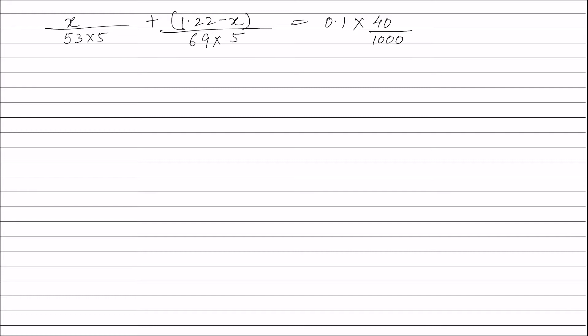Solving this equation, the value of x is 0.53 grams. Therefore, the weight of sodium carbonate in the mixture is 0.53 grams and the weight of potassium carbonate in the mixture is 1.22 − 0.53 = 0.69 grams.